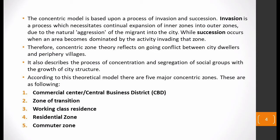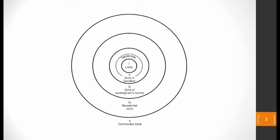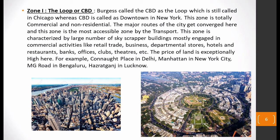This figure is the one Burgess gave in his book — the original figure. He called the CBD 'the Loop.' After that comes the factory zone or zone of transition, then the zone of working men's homes, then the residential zone, then the commuter zone. The first zone is the Loop — Burgess called the CBD 'the Loop,' and in Chicago it is still called the Loop today. This zone is totally commercial and non-residential — no people live here permanently.